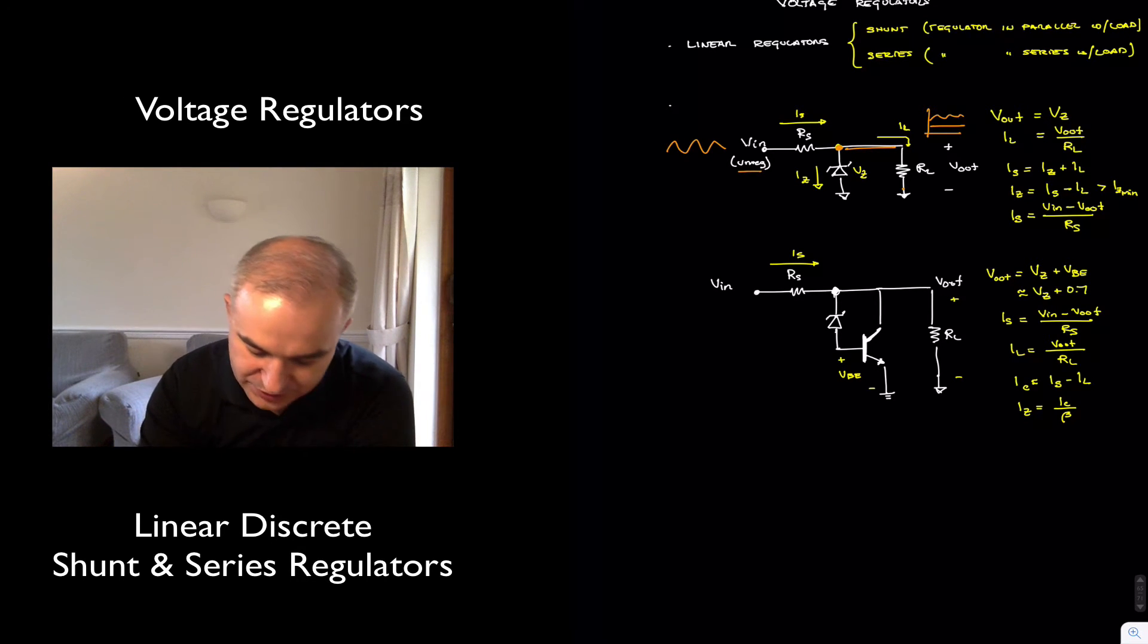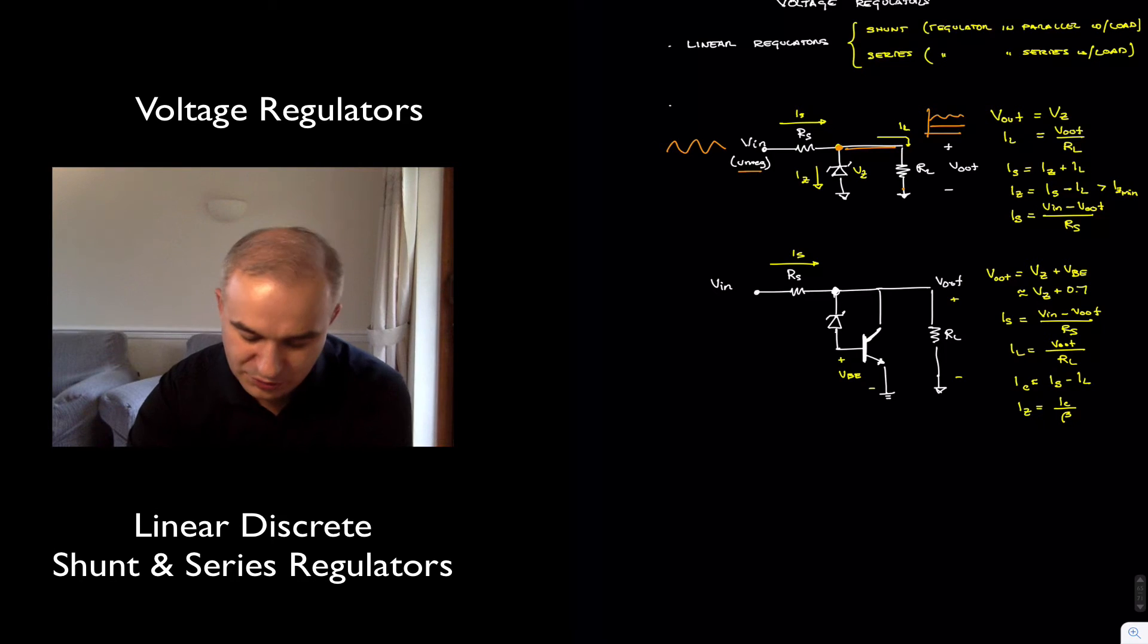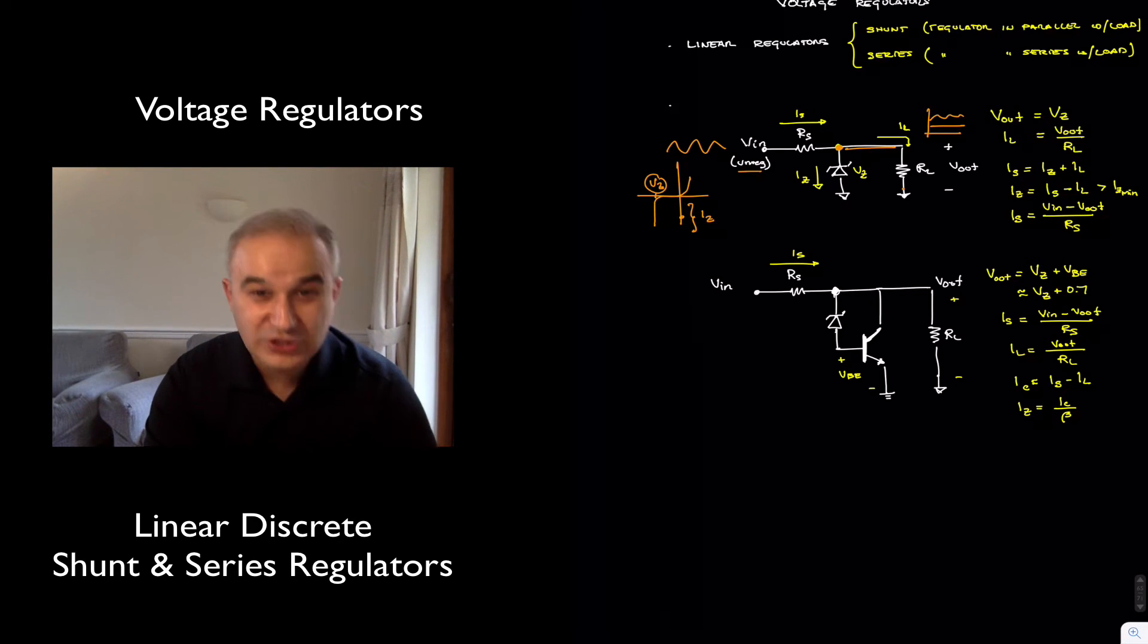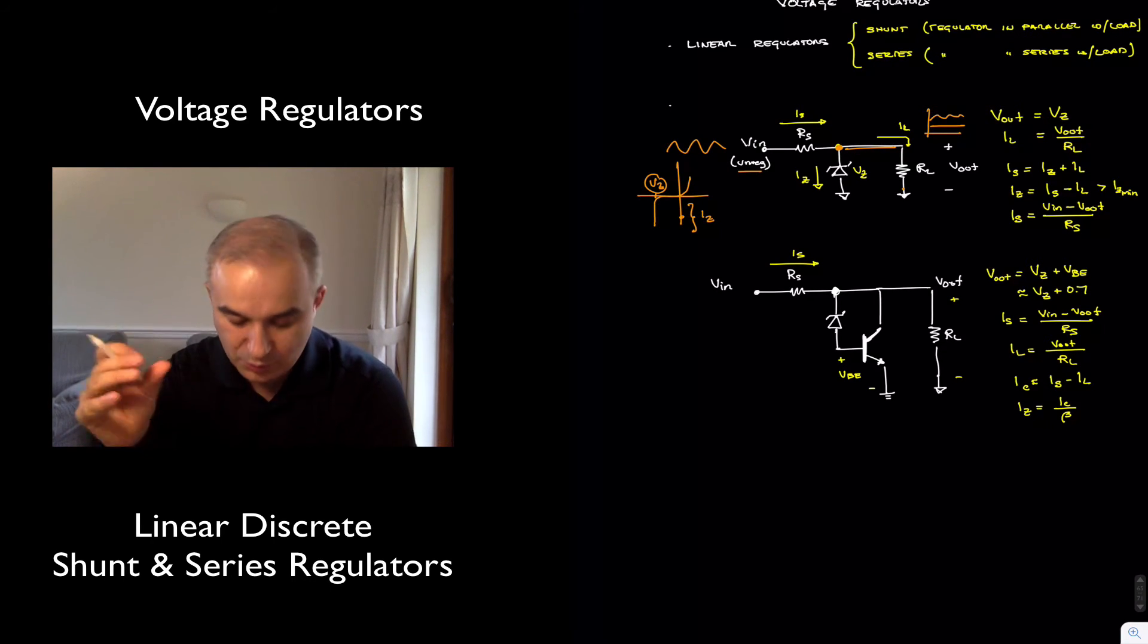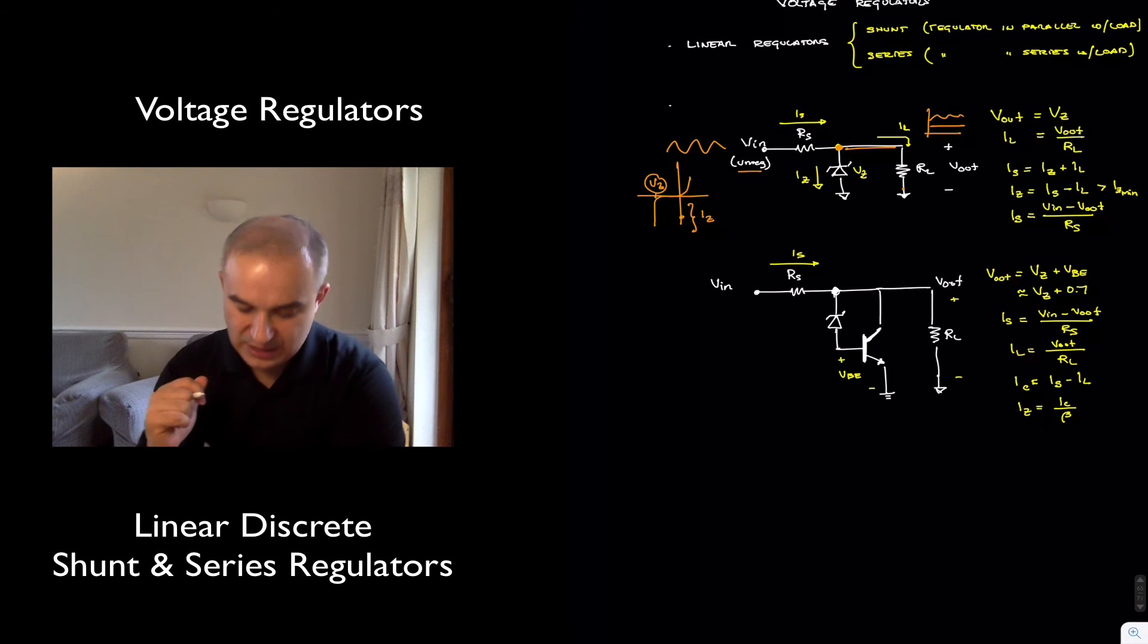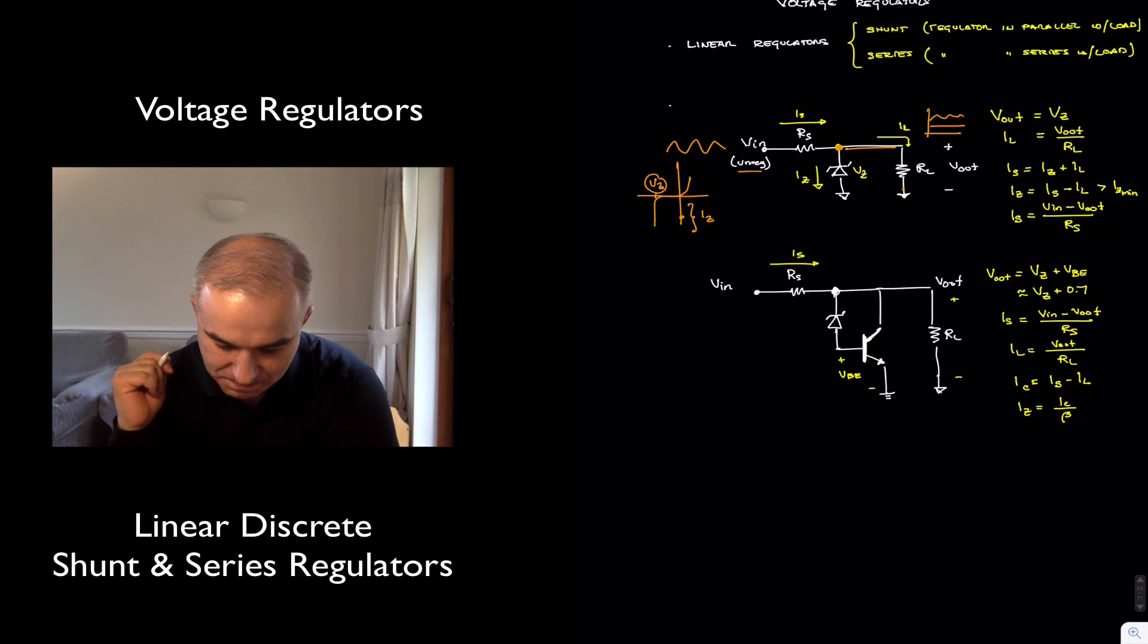And the way this circuit works is that as long as I have enough Zener current, enough current going through the Zener to make sure that the Zener is in the reverse breakdown region, changes in current are going to give approximately the same output voltage, the Zener voltage. Now, this is easy to design. If we want a voltage output at any particular voltage that we want, you choose the Zener voltage. You can also put diodes in series to achieve that output voltage.